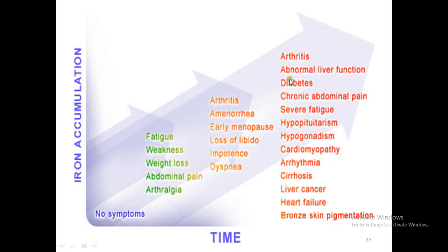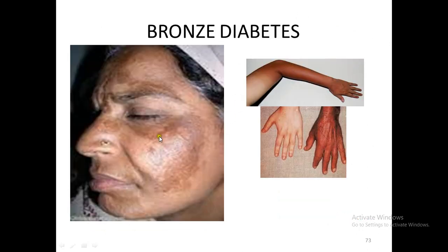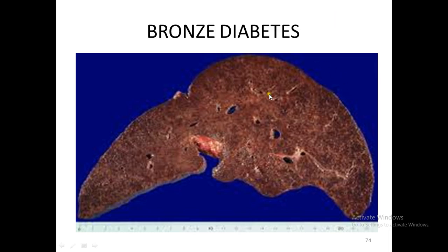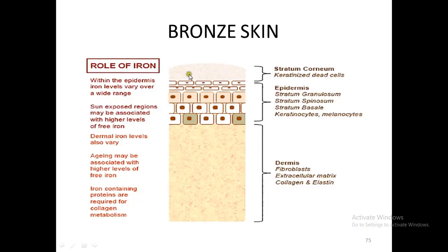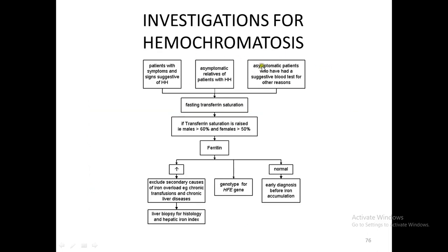These various stages develop with time in a patient with excessive iron accumulation. The skin of the patient becomes bronze-colored due to iron deposition in the epidermis of exposed parts. The liver of a patient with bronze diabetes looks almost blackish because it is so overloaded with iron. Iron levels in the skin vary over a wide range — more iron is seen in sun-exposed regions. The investigation for hemochromatosis begins with fasting transferrin saturation; if raised, ferritin stores are then measured to determine how much iron is already being stored.